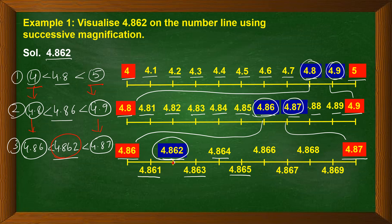This is the point where 4.862 is represented on the number line through successive magnification. We started with a small zone of 4 and 5 and expanded it — using magnifying glass — to drill down and show the number with more decimal places. If there are even more decimal places, we can continue this process further.